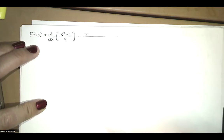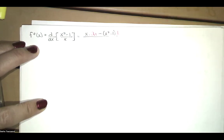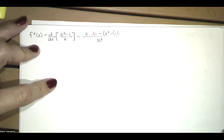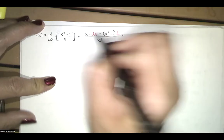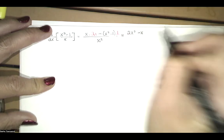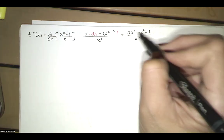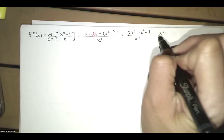f double prime of x is the derivative of x squared minus 1 divided by x. Using the quotient rule — low d high minus high d low, divided by low squared — we get x times 2x minus (x squared minus 1) times 1, all divided by x squared. Distributing gives 2x squared minus x squared plus 1, all divided by x squared, which simplifies to x squared plus 1 divided by x squared.